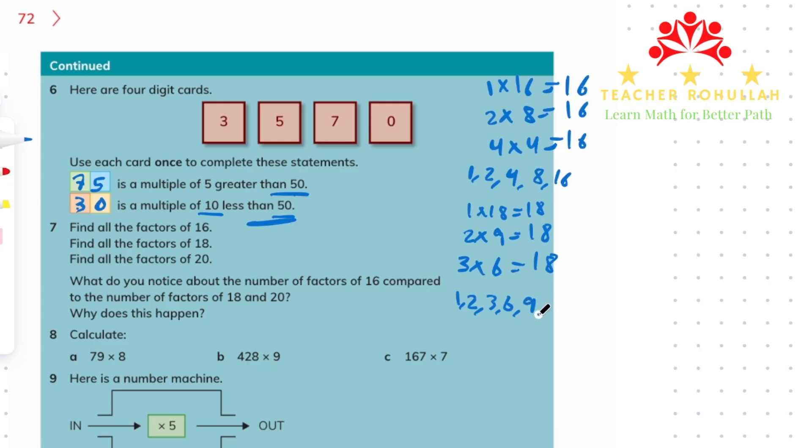Let me list the factors of 20 here. 1 times 20 is equal to 20, 2 times 10 is equal to 20, 4 times 5 is equal to 20. If we now list them, we have 1, 2, 4, 5, 10, and 20. These are the factors of 20.